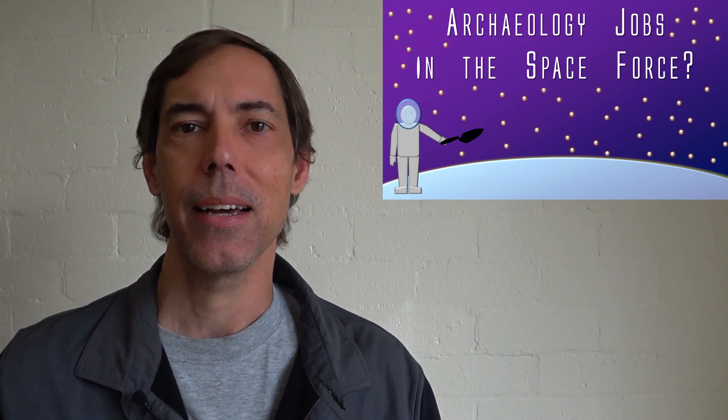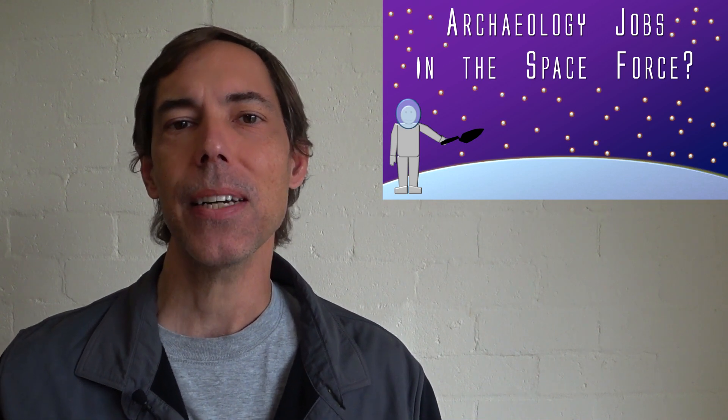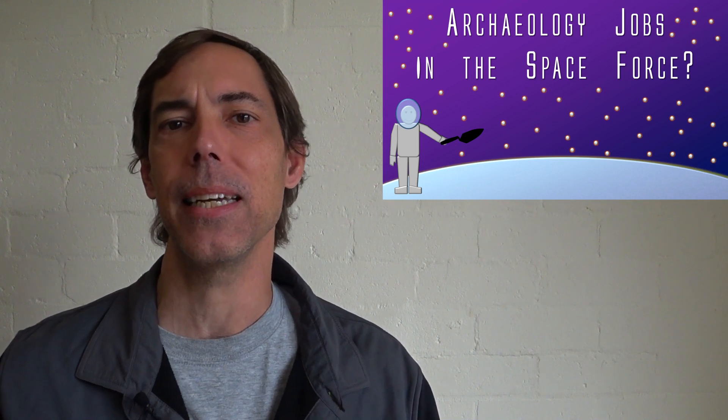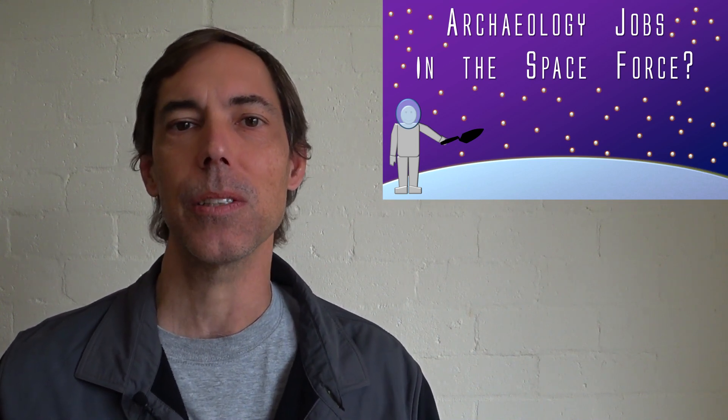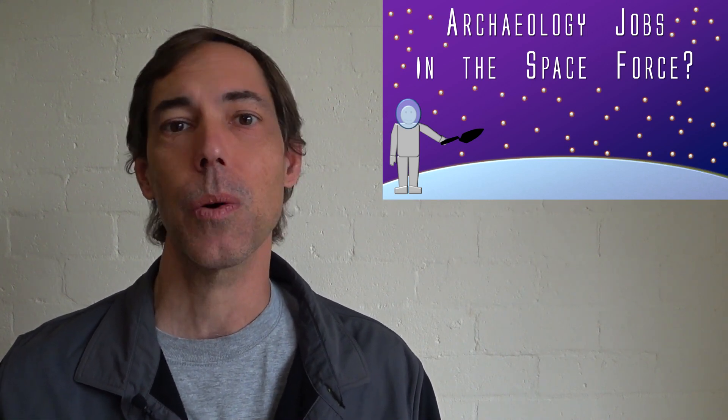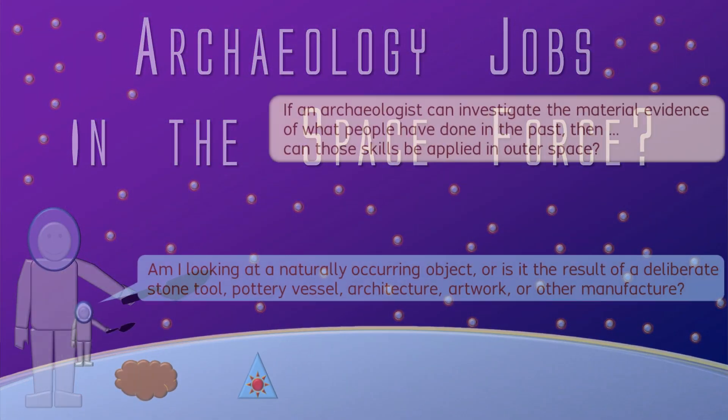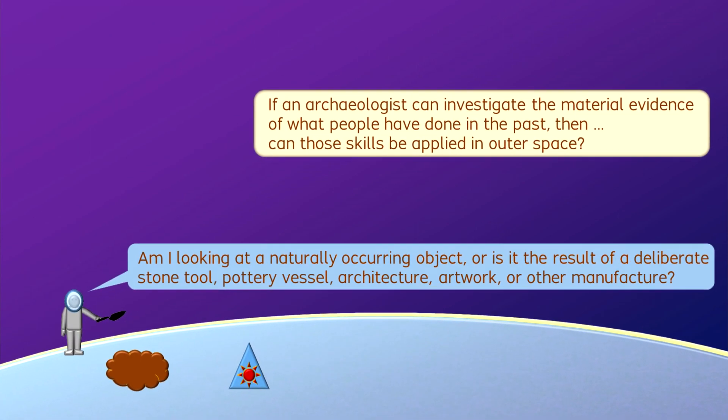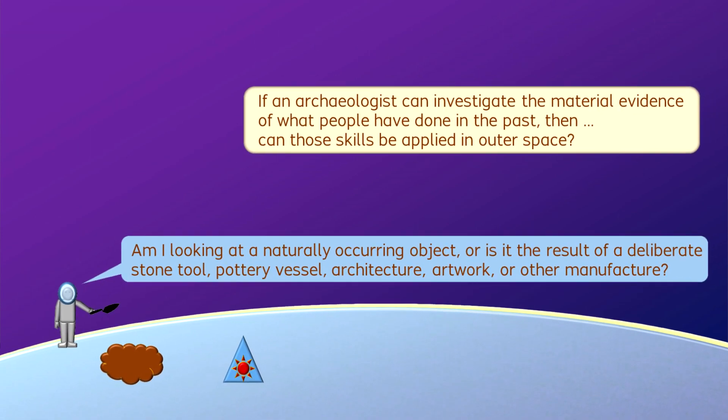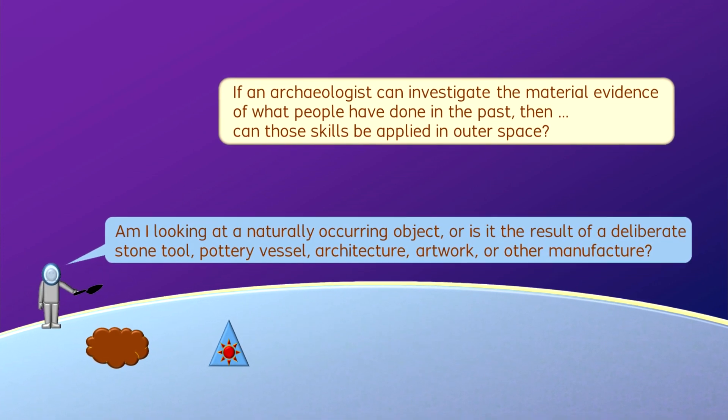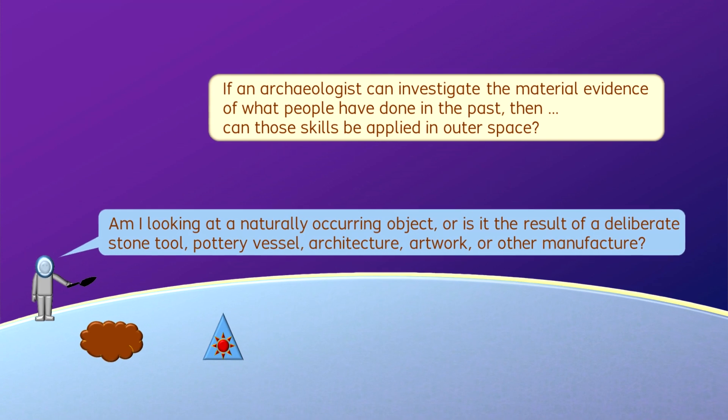The core idea here is that archaeologists can investigate the faint surviving clues and traces about what people did in the ancient past, and perhaps these skills could be applied in other settings, such as with the Space Force or with other missions into outer space. An archaeologist should be able to observe a material object, then clarify if it was made through natural processes or artificially as a tool, as an artwork, or as any other form of artifact.